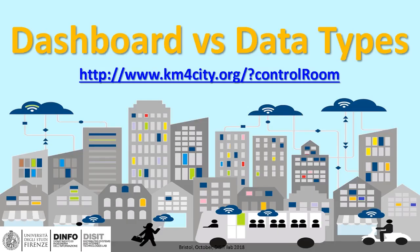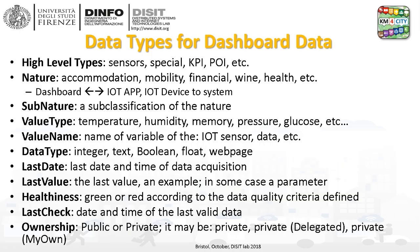Regarding dashboard data types — a lot of different data types can reach the dashboard. They are classified with high-level types, natures, sub-natures, value types, value names, data types, last value, last date, healthiness, and last check ownership. For each data item, you can have a specific view on each parameter, and the healthiness status allows you to understand if the data is correct and valid. From the tools for creating dashboards, you can select and arrange them with a set of different high-level types.